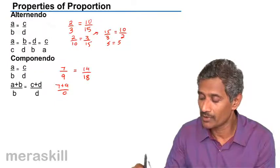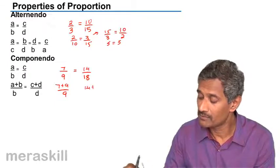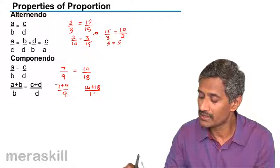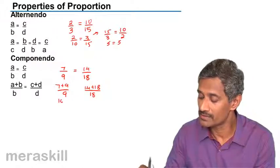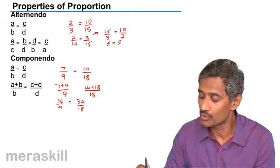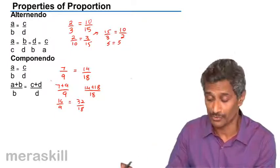So, 7 plus 9 upon 9 and 14 plus 18 by 18. This will turn out to be 16/9 and this is 32/18. Yes, these two are also equal. So this is the componendo rule.